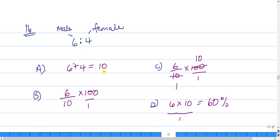Now 6 out of the 10 represents the males. So 6 over 10 multiplied by 100 would give us that percentage. 10 into 10 goes 1 time, 10 into 100 goes 10 times.